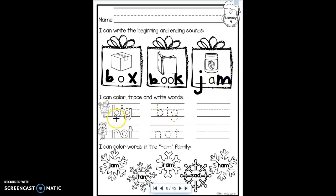In the middle, we have the sight words big and not. Big is spelled B-I-G. I need to color the first one. I'm going to trace the second one, B-I-G. And then I'm going to write it on my own on the third line. For the next one, I need to do the same thing. I need to color the first one, N-O-T. Then I need to trace. N-O-T. Not.